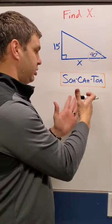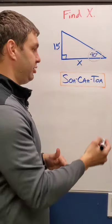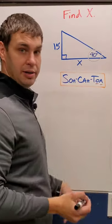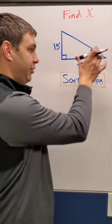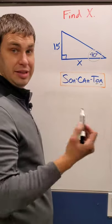So in my word SOH-CAH-TOA, the only one that has opposite and adjacent is tangent, TOA. So we have to set up an equation that says tangent of our angle equals the opposite over the adjacent.